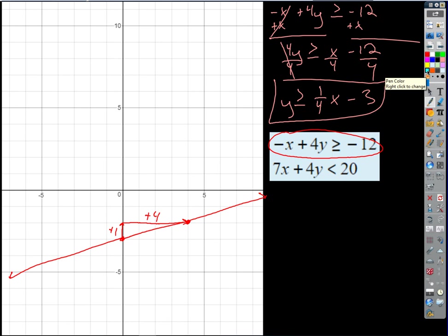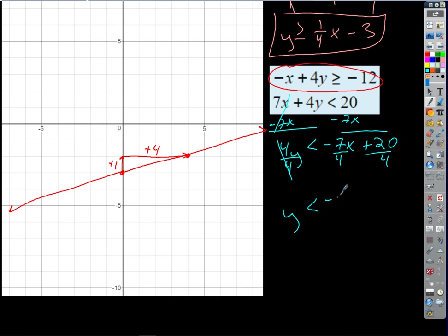So we'll end up getting something like that. I get y is greater than or equal to x over 4. If I write that in the form mx, what's the fraction that's being multiplied by x? One fourth. One fourth x. And then, negative 12 over 4 is just minus 3. How about this guy here? What are we going to do first? Subtract 7x, right? Divide by 4. I get 4y is less than negative 7x plus 20. Divide by 4. And so, we get y is less than negative 7 fourths x plus 5.